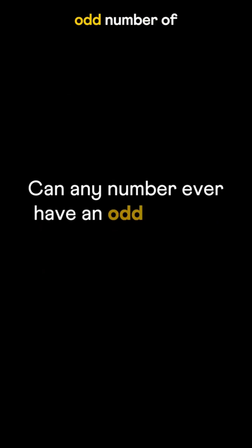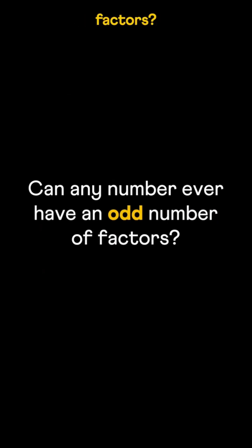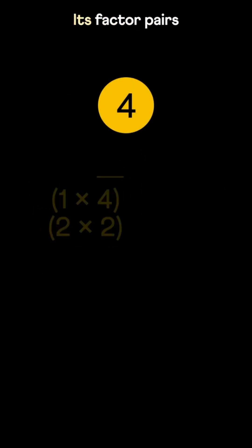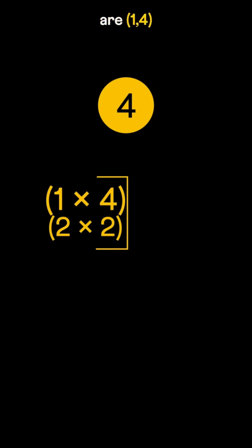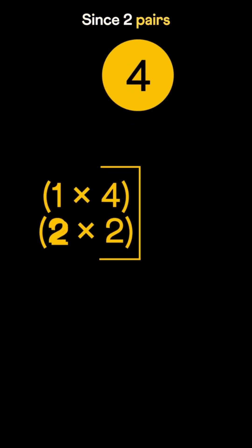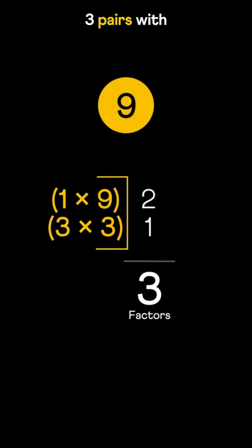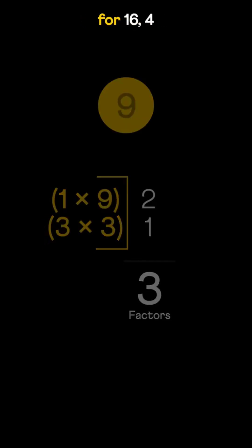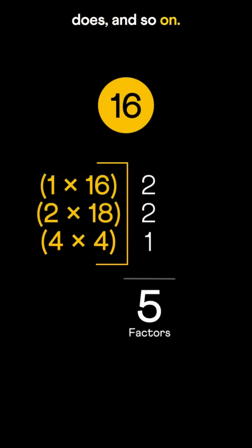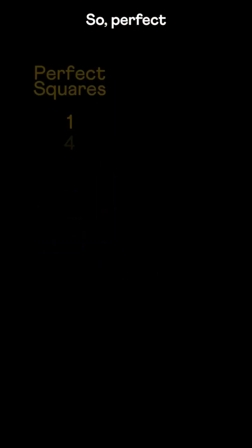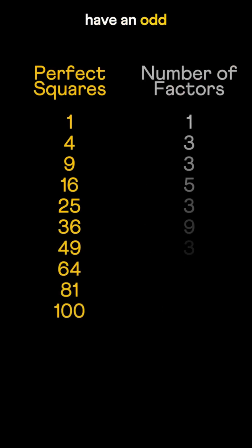Can any number ever have an odd number of factors? That happens only when a factor pairs with itself. Take 4 — its factor pairs are 1 & 4, and 2 & 2. Since 2 pairs with itself, it's counted once, making the total odd. Similarly, for 9, 3 pairs with itself; for 16, 4 does, and so on. So perfect squares have an odd number of factors.